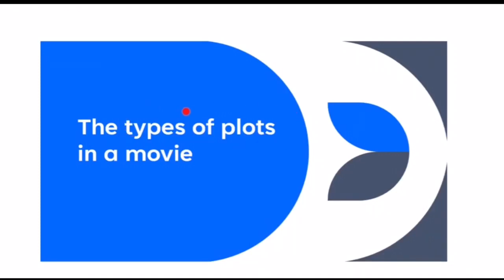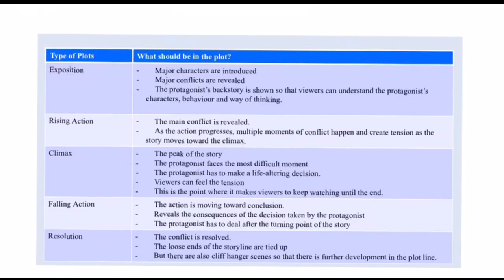There are five types of plots. The first one is known as exposition. This is the plot where major characters are introduced, especially the protagonist, and this is also where major conflicts are revealed. During the exposition, the protagonist's backstory is shown so that viewers can understand the protagonist's character, behavior, and the way the protagonist would think in that movie.